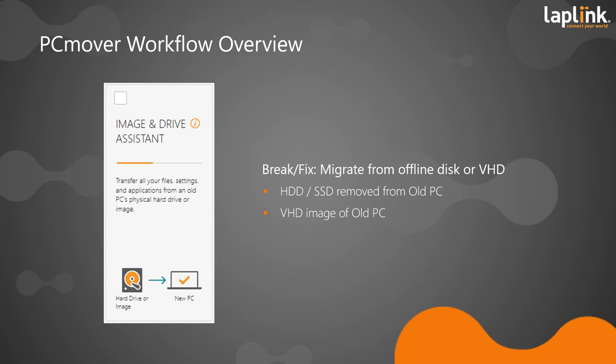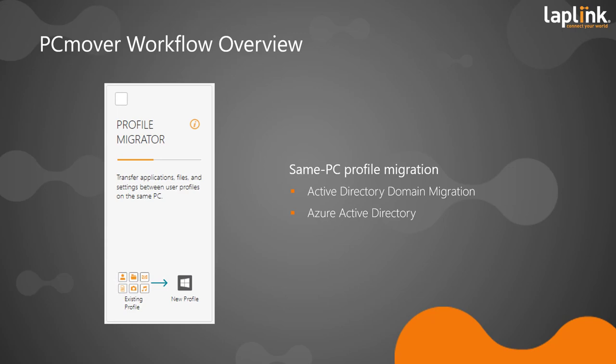You can also import from a VHD image backup of an old PC — really any imaging software that you can mount onto the new machine. The fourth workflow is the profile migrator, intended for two use cases. First, on-premises Active Directory domain migration — migrating user information from the old account into a new domain account. Second, cloud migration: when an organization manages a user's PC logged in with an Azure Active Directory account, PCMover's profile migrator makes it easy to migrate from the old on-premises domain account.